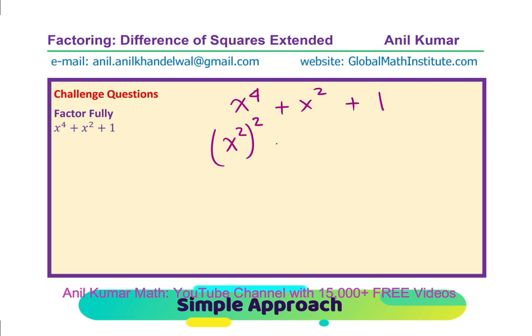we can write this as x square whole square, right? And here we have plus 1 which is kind of 1 square, and we need 2x square here, right? 2 times x square. But we have only 1x square. So we could write this as 2x square minus x square. The two statements are exactly same, correct?